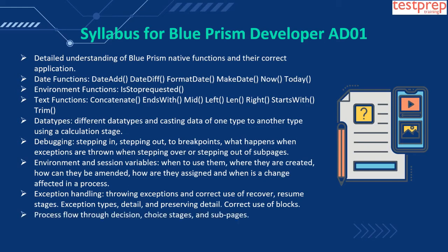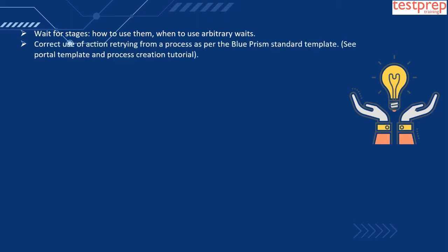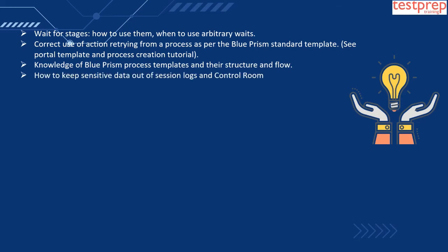Eight, exception handling: throwing exceptions and correct use of recover and resume stages, exception types, detail and preserving detail, and correct use of blocks. Nine, process flow through decision and choice stages and sub-pages. Ten, wait for stages: how to use them and when to use arbitrary waits. Eleven, correct use of action retrying from a process as per the Blue Prism standard template. Twelve, knowledge of Blue Prism process templates and their structure and flow.